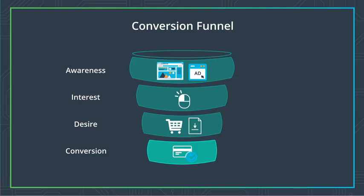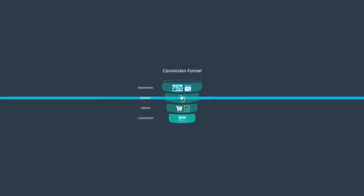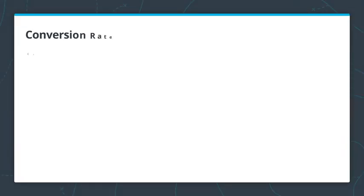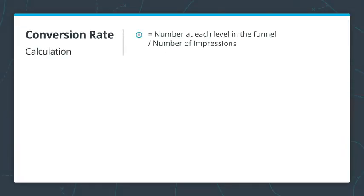So essentially, you're calculating the conversions, or your success rate at getting a potential customer to do what you want them to do at each level of the marketing funnel. And you compare this number against your impressions. Let's look at an example in the next video.